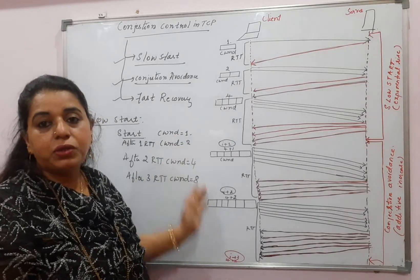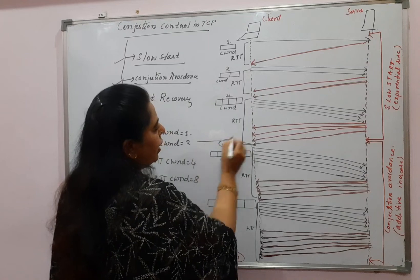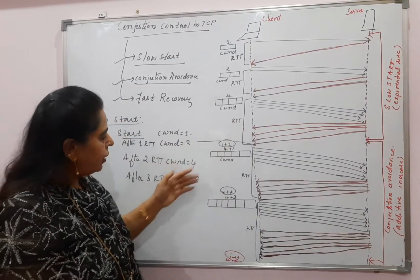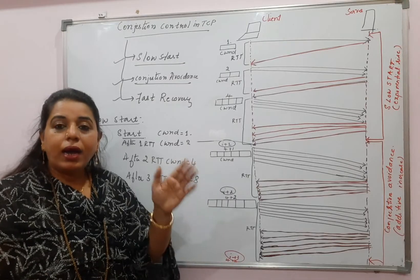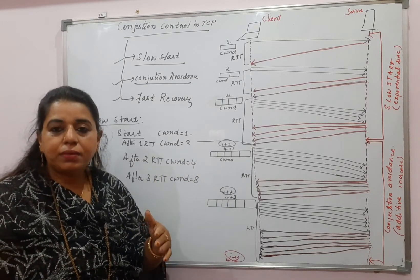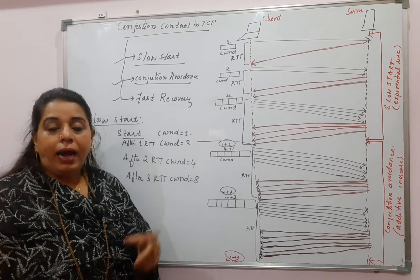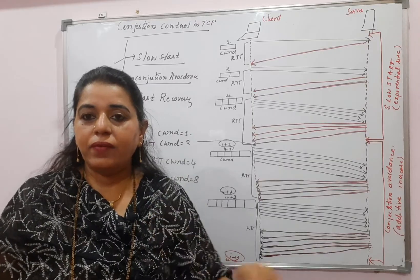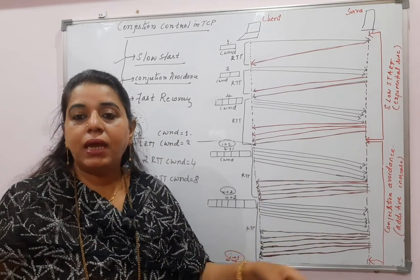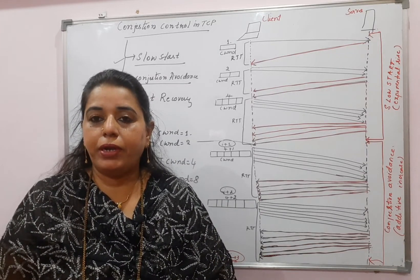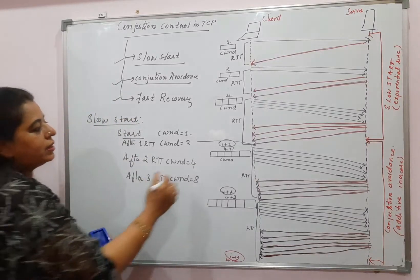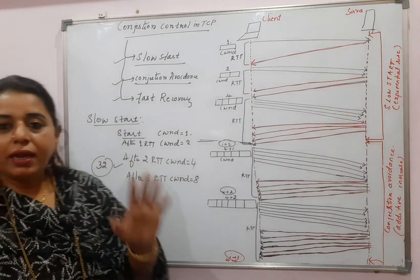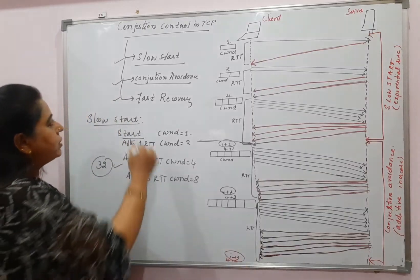But how long should this continue? This exponential increase continues until a threshold value is reached. TCP sets a threshold value because if the sender keeps increasing this way, it will eventually cause congestion in the network. Once the threshold is reached — let us assume it is 32 — the sender stops this phase and begins the next phase called Congestion Avoidance.